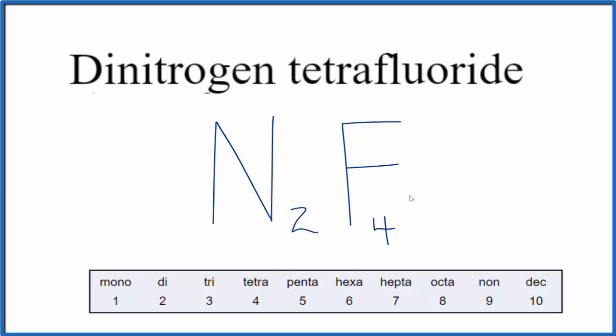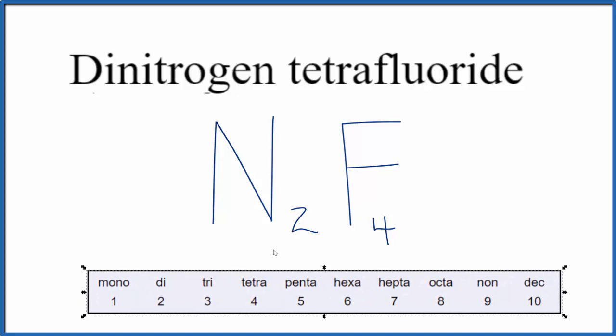If you were given the formula and asked to write the name for N2F4, you need to recognize that nitrogen and fluorine are both nonmetals. Since they're nonmetals, it's a molecular compound, and you need to use these prefixes to tell the number of atoms.